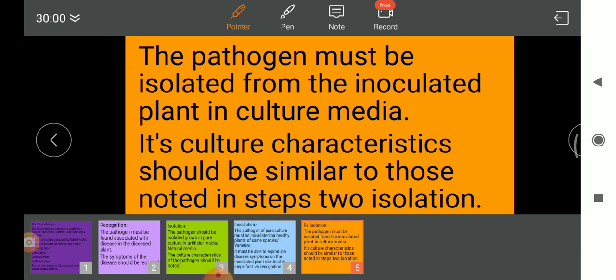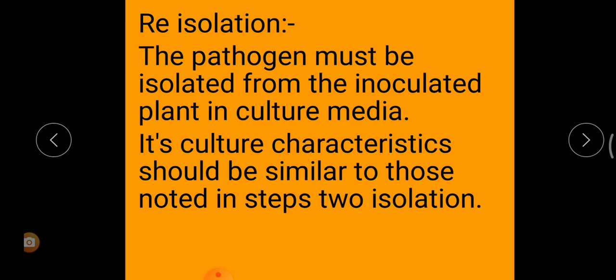The prepared medium should be poured into rimless culture tubes and their mouths plugged with cotton. All these things are placed in a wire basket and kept in an autoclave at 15 pounds per square inch steam pressure for at least 15 to 20 minutes. By doing so, the media and other things get sterilized.